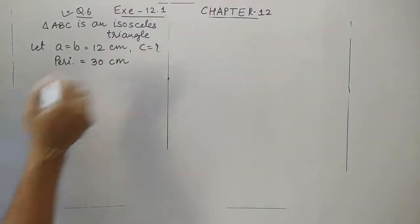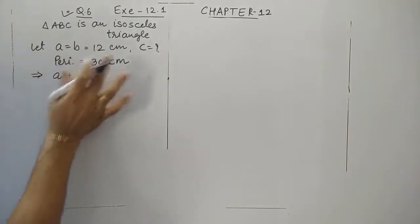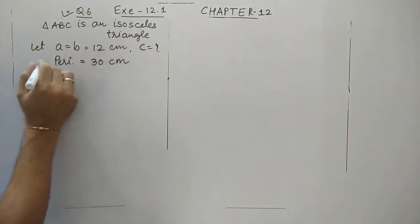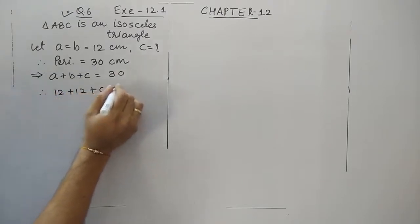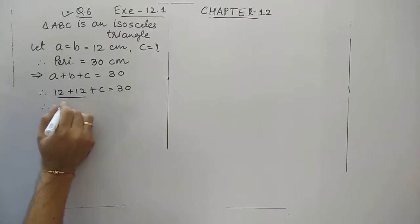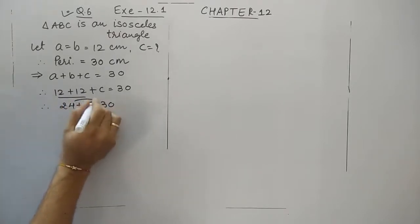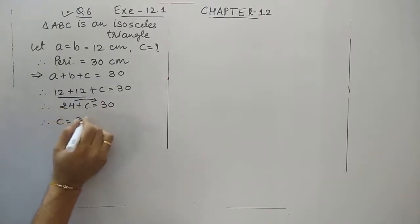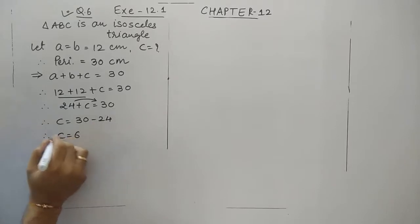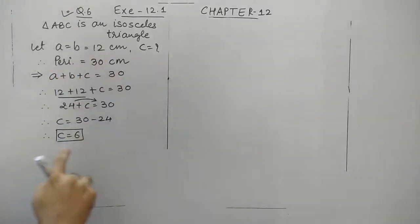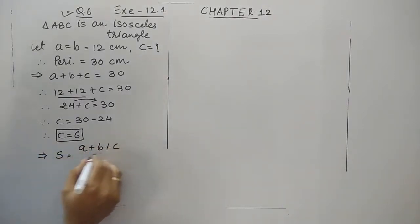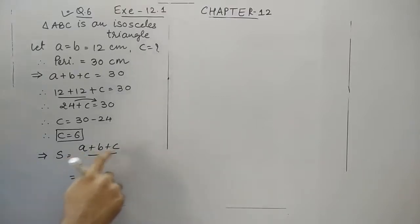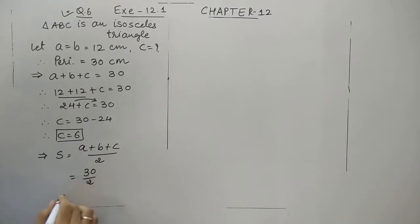First we need to find the 3rd side using the perimeter. A plus B plus C equals 30. A is 12 and B is also 12, so their sum is 24. Therefore the 3rd side C is 30 minus 24, which equals 6. Now let's find the semi-perimeter: the perimeter is 30, so S equals 15.